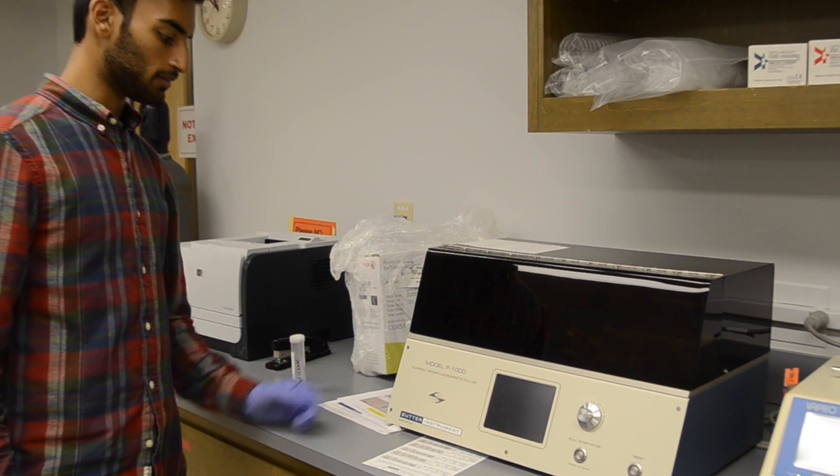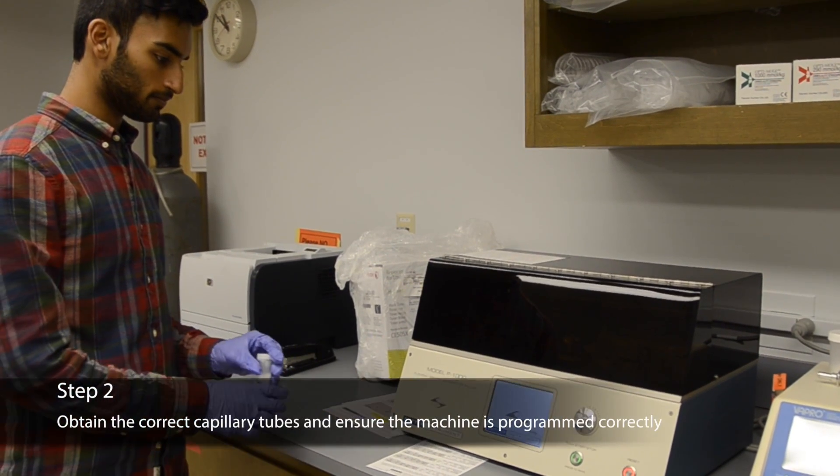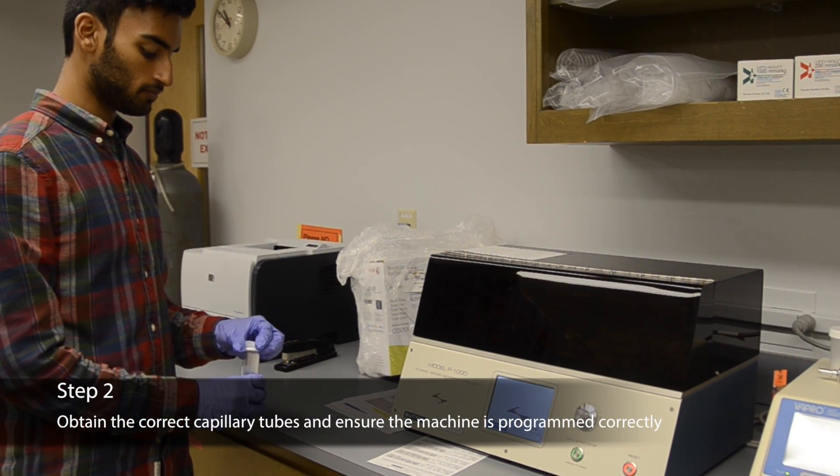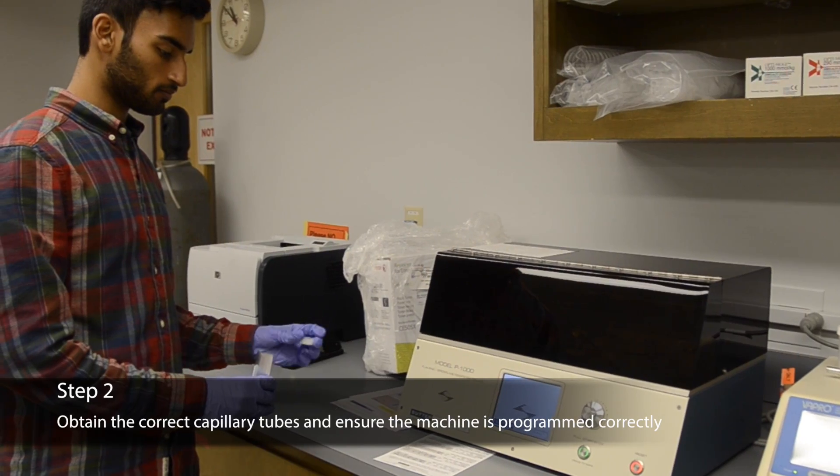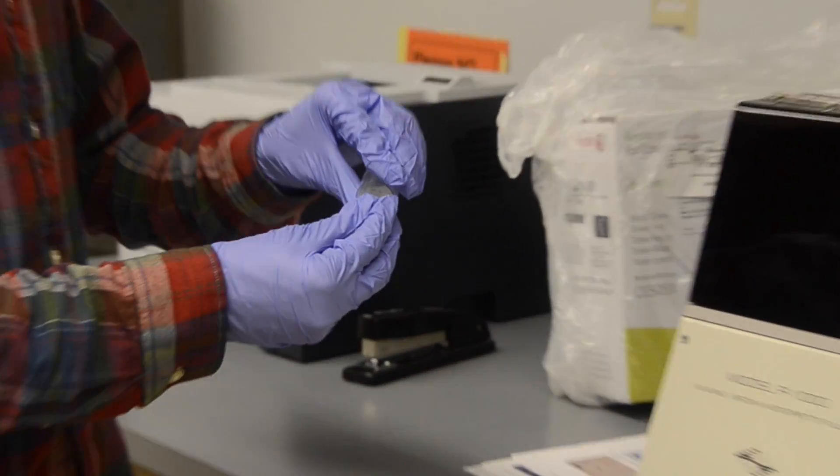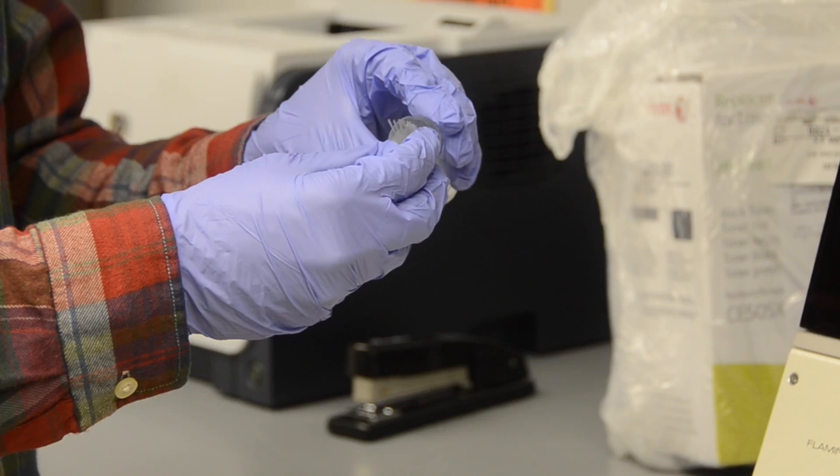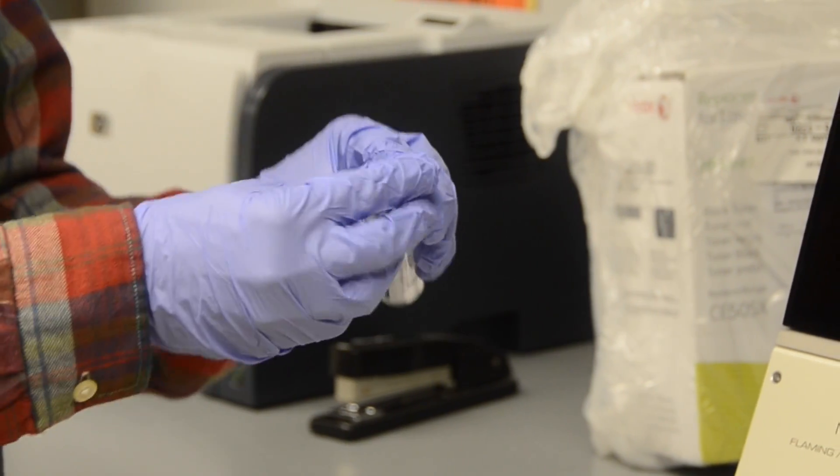Turn on the needle puller. We use thin-walled world-precision capillary glass tubes to pull needles. They are filamentous, 4 inches long, are 1 millimeter in outer diameter and 0.75 millimeters in inner diameter.